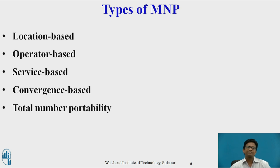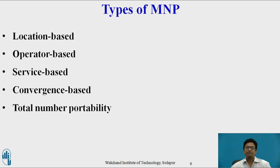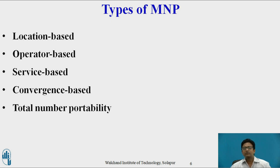Next are the types of MNP. First is location-based, which enables a mobile subscriber to use the same number when shifting from one geographical area to another. Operator-based makes it possible for a mobile subscriber or a fixed telephone subscriber to shift from one mobile service provider to another, but in the same area, and retain the original number. Service-based enables a subscriber to use the same number across different mobile technologies — that is, GSM technology or CDMA technology — but based in wireless local loop.